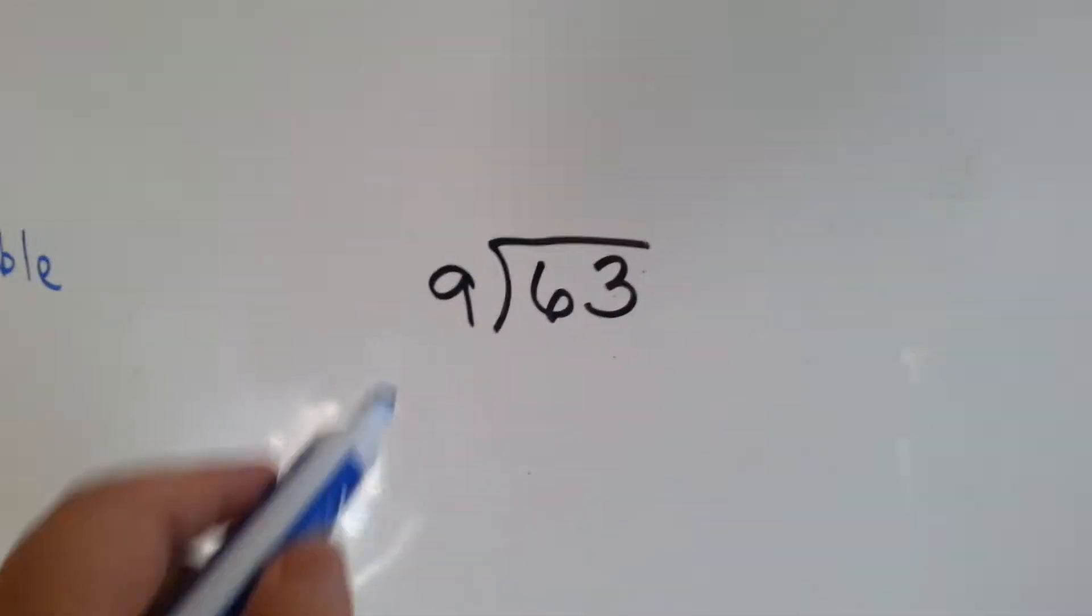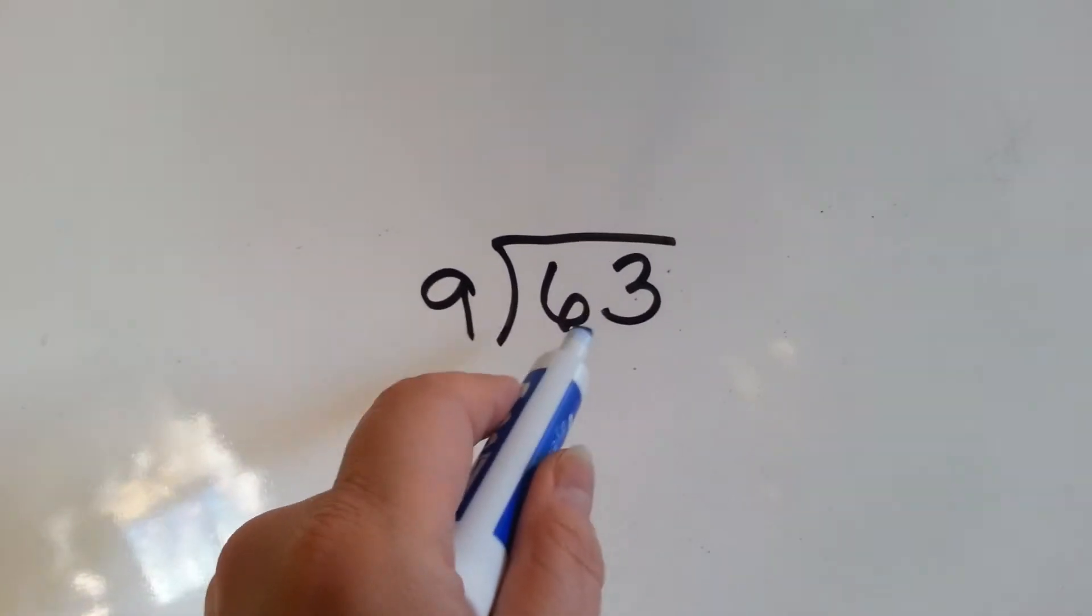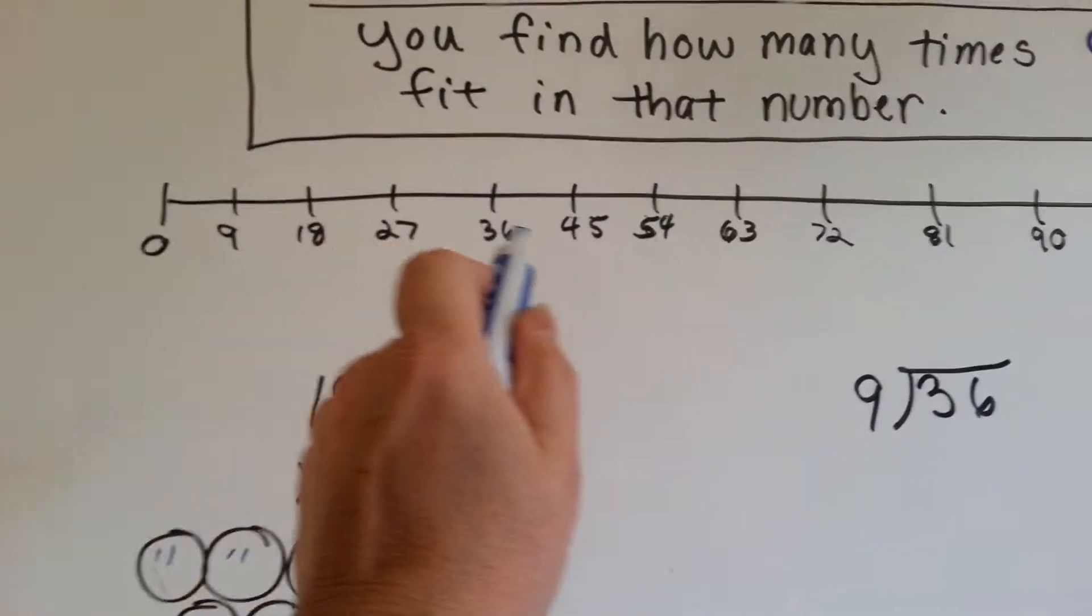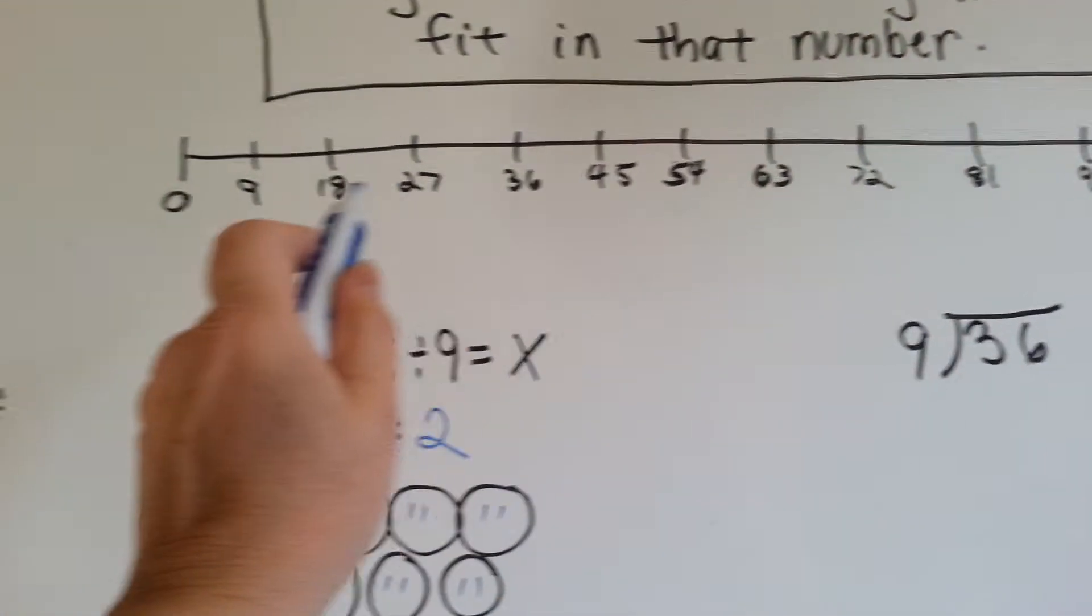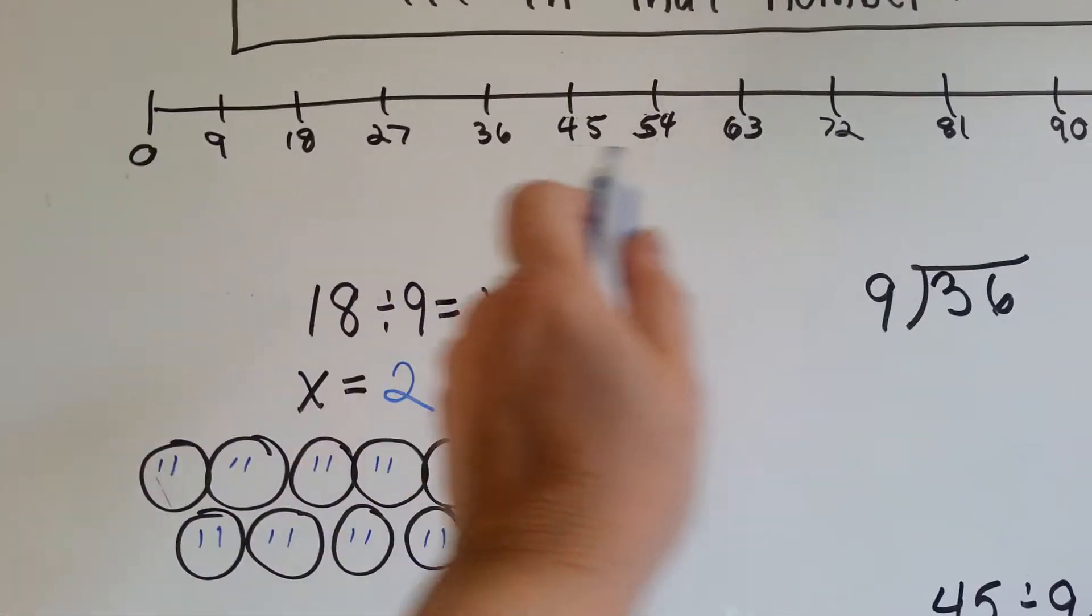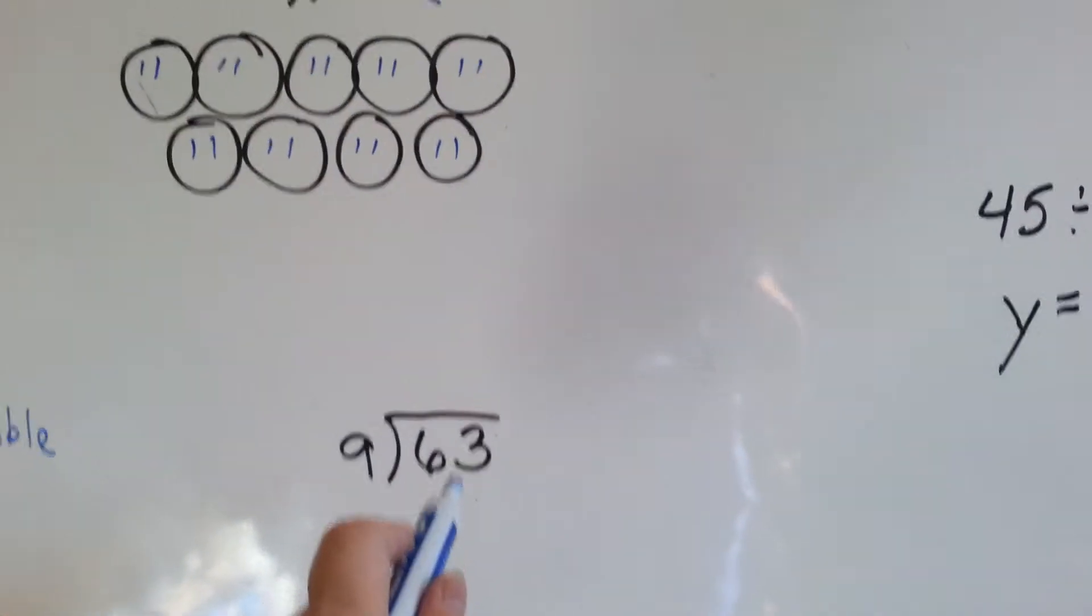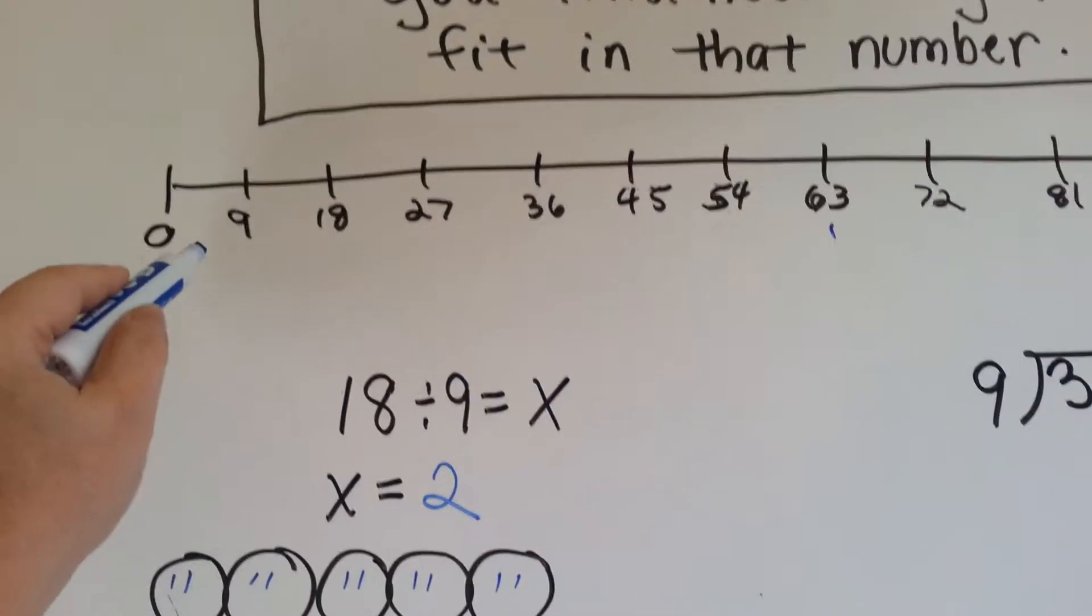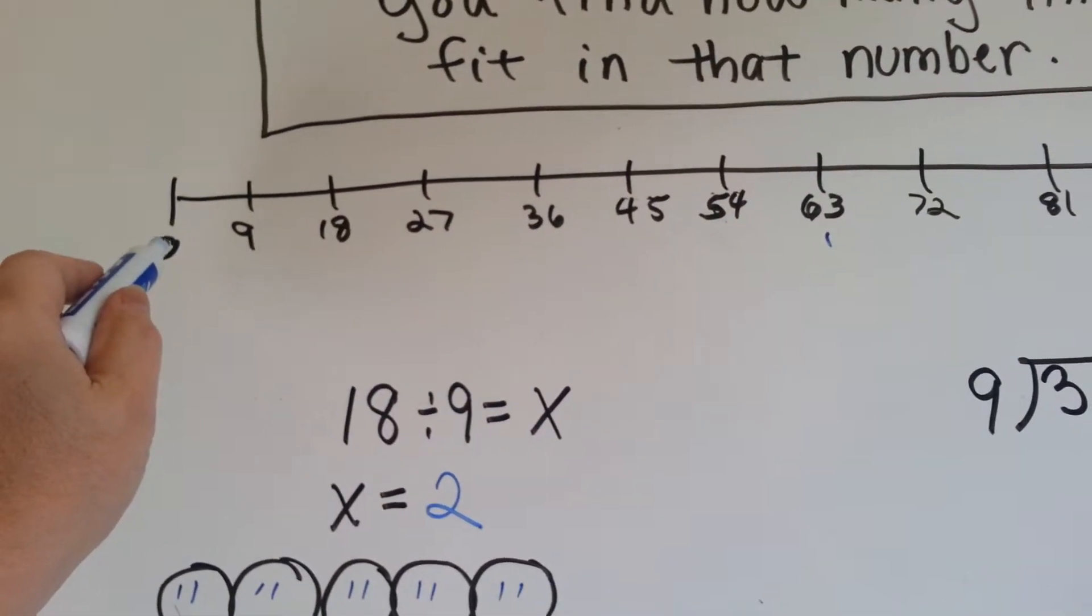9 goes into 63 how many times? This is long division. We've got our number line with our 9 times table on here so we can skip count. We're doing 9 goes into 63. Here's the 63. Let's skip count and find out how many times we jump to get there.